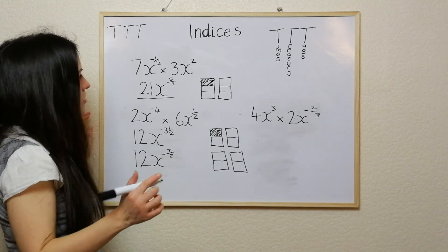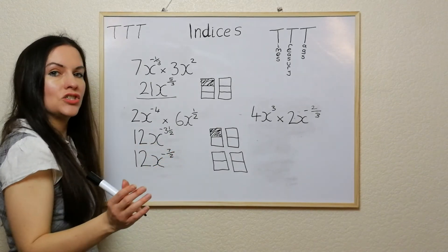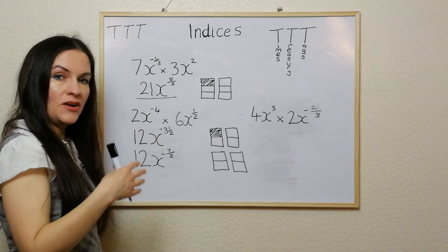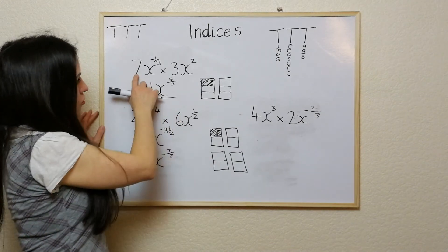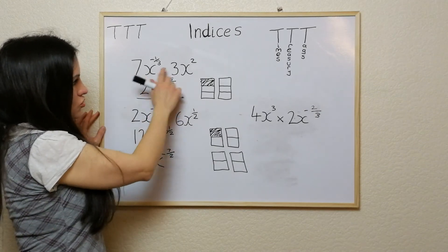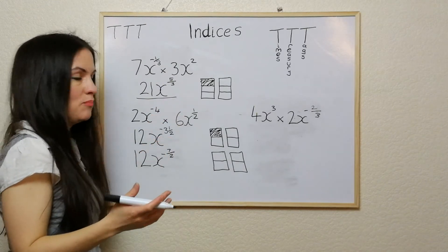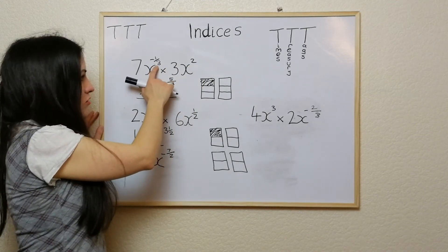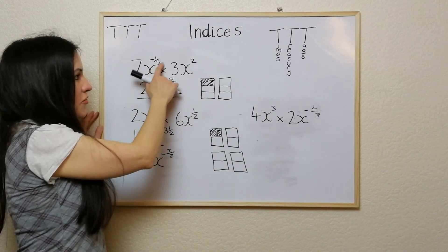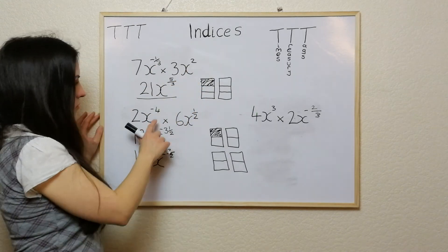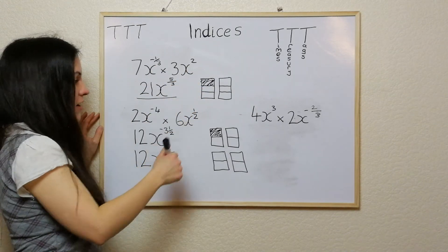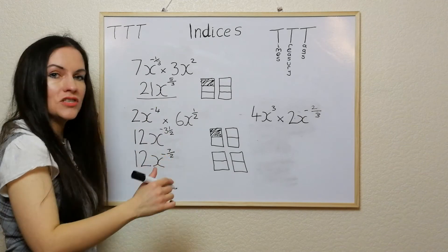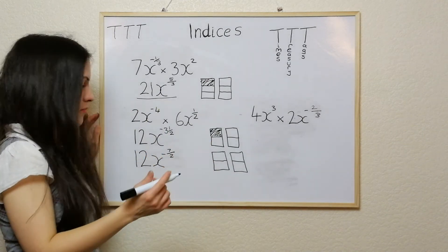It should be noted that with these questions, these ones all have negatives in them. If there isn't a negative, it's pretty straightforward — you're just times-ing those two and adding those two. For example, a third add 2 is just 2 and a third; 4 add a half is just 4 and a half. But because there's a negative present in each of these, this is where we have to bring in the chocolate bars.